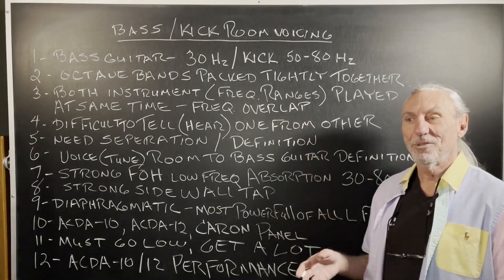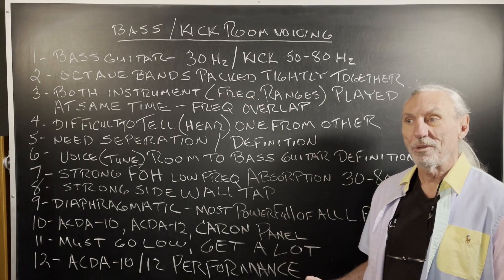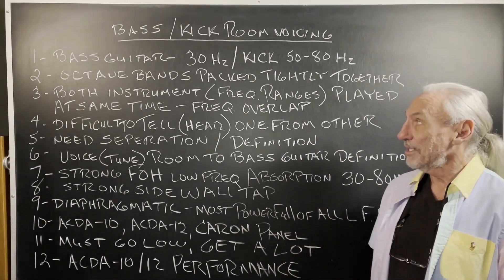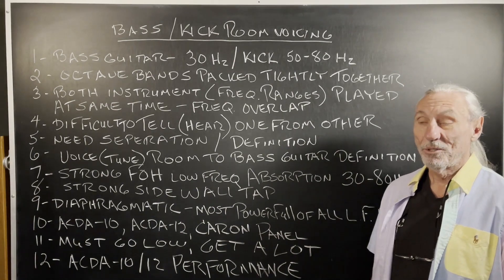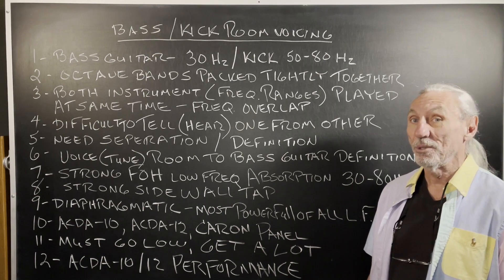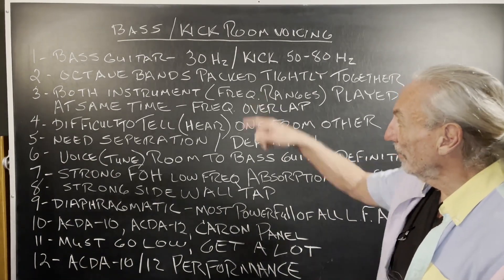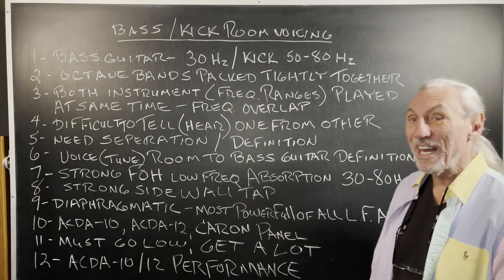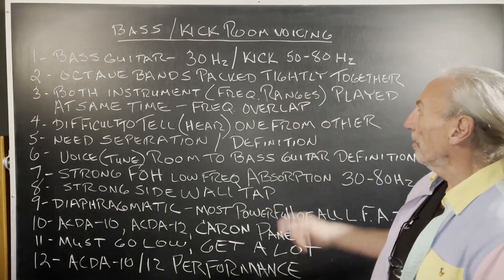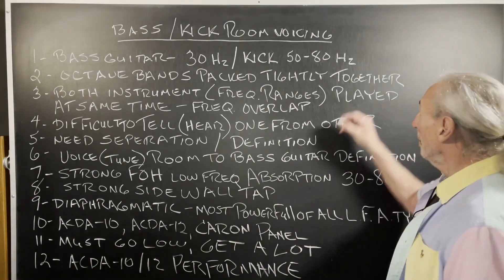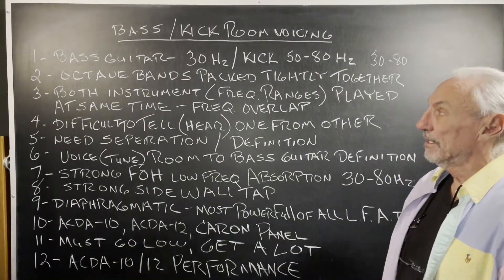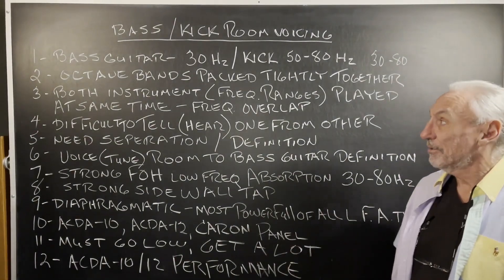I like to tune our rooms so that there's definition and separation in those low frequencies. Bass guitar and kick drum are two of the lowest frequency-producing instruments I can think of, next to a gong. Bass guitar is around 30 cycles, kick is 50 to 80 — right in that frequency range. So those two frequency ranges, let's call it 30 to 80, we really need to focus on to get the kick and bass guitar to sound good.